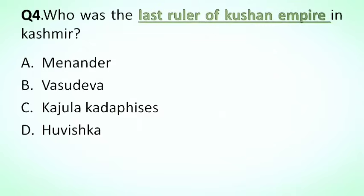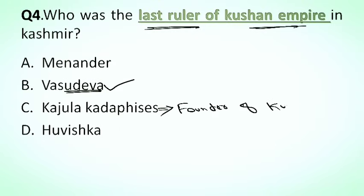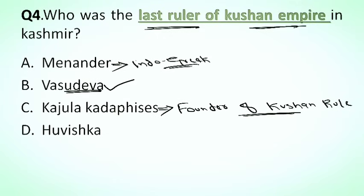Our next question is: who was the last ruler of the Kushan Empire in Kashmir? Options: A. Manindra, B. Vasudeva, C. Kujala Kadphises, D. Huvishka. The correct answer is option B, Vasudeva. Vasudeva was the last ruler of the Kushan Empire in Kashmir. Kujala Kadphises was the founder of Kushan rule in the northwestern parts of India. Manindra was the most important Indo-Greek ruler in Kashmir. And Huvishka was a Kushan ruler who laid the foundation of the famous Houshkapura.